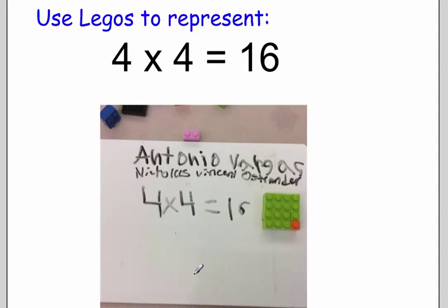Antonio and Nick decided to make an area model where they have four rows and four columns, which then makes an area of 16 little Lego building blocks. Great job.